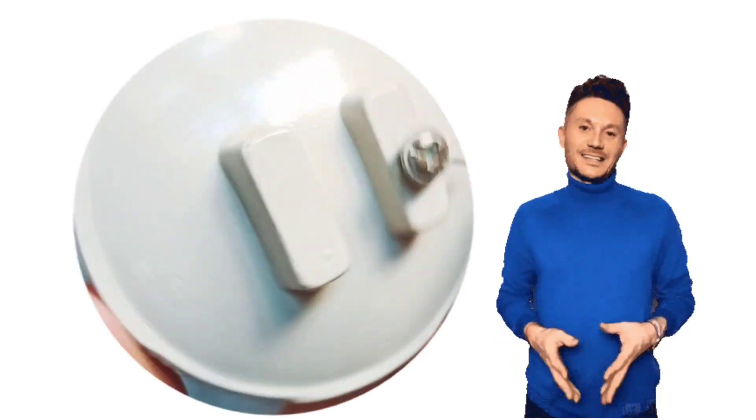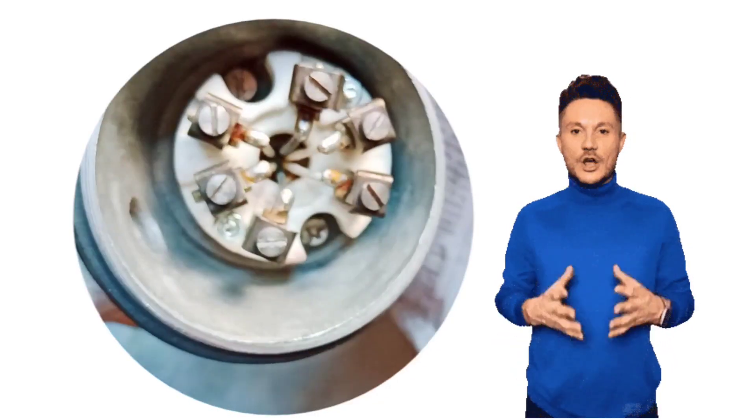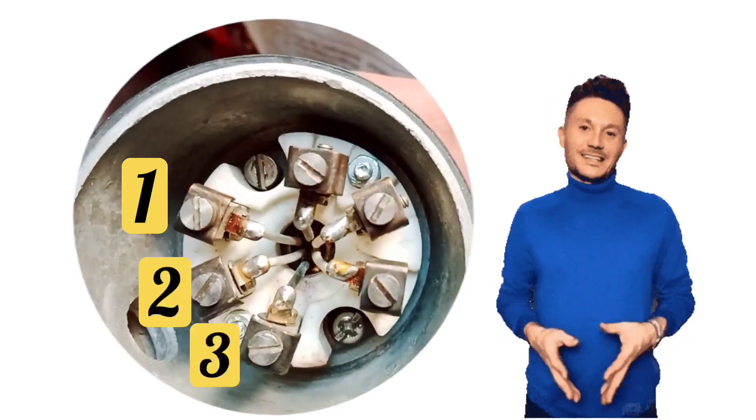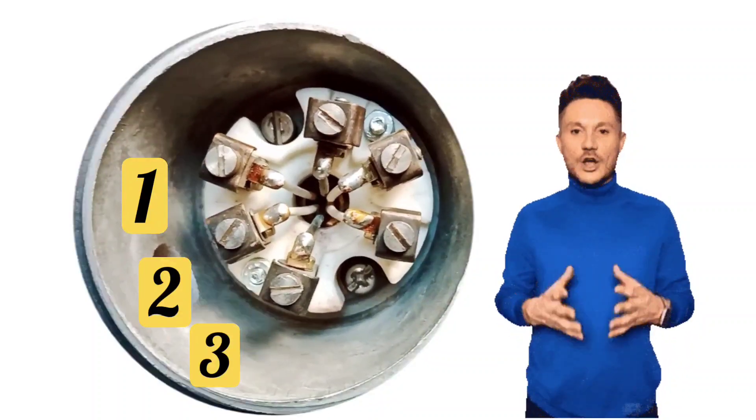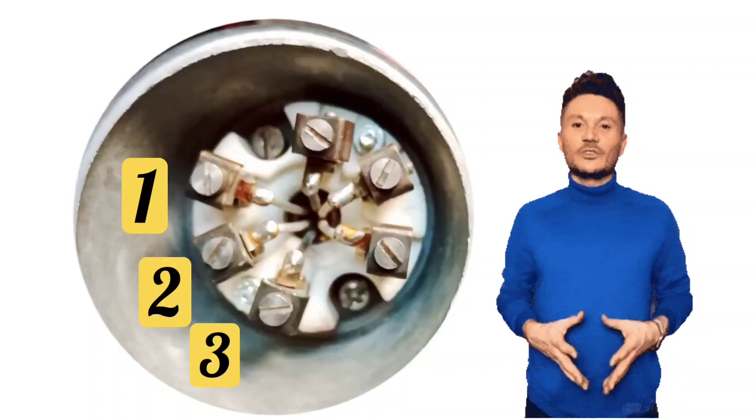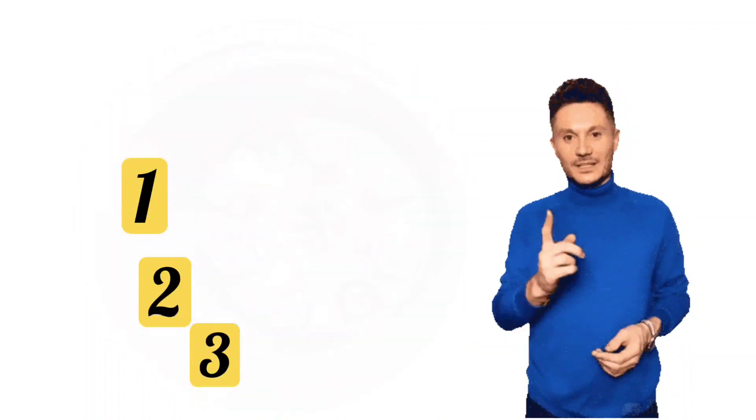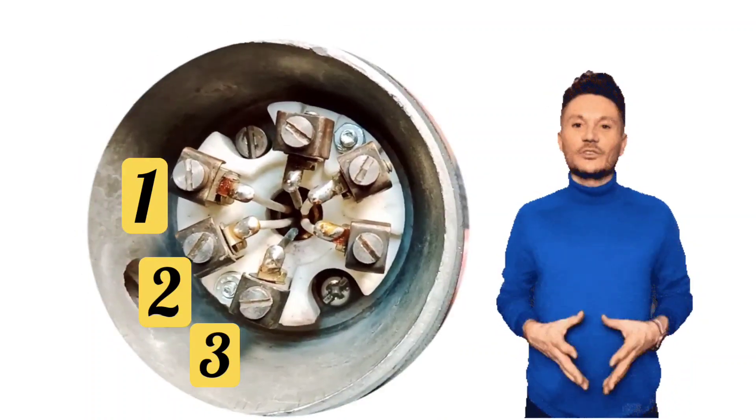When you open RTD, you will see three wires. Two wires are of same colors, and one wire is of different color. Suppose two white color wires and one black color wire is there.